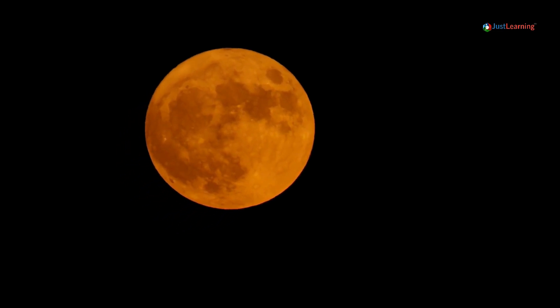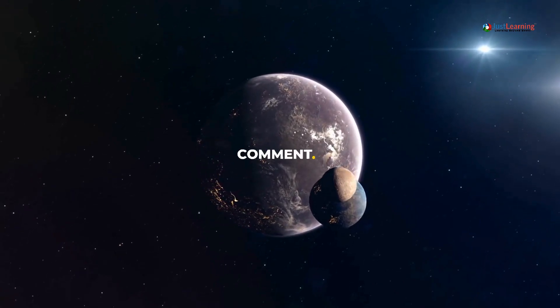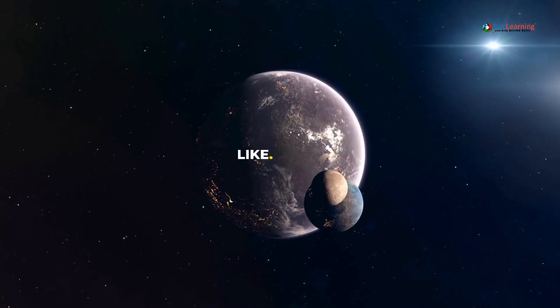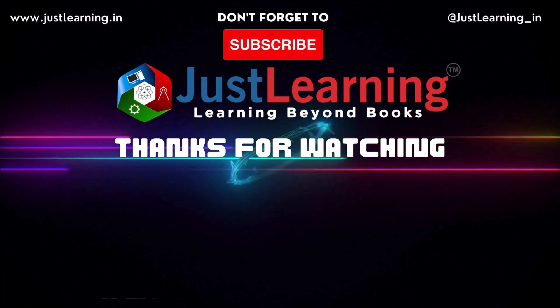But this uncertainty doesn't stop researchers from being able to venture a guess. They estimate that there are probably about 10,000 moons in the solar system.